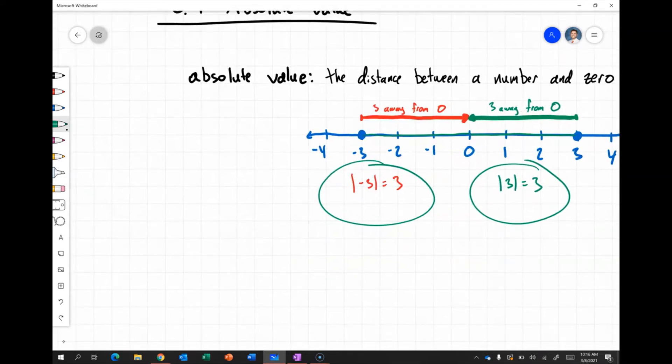We can show the absolute value for any number. We'll write it with these vertical lines like this. So the absolute value of negative five would be equal to five.